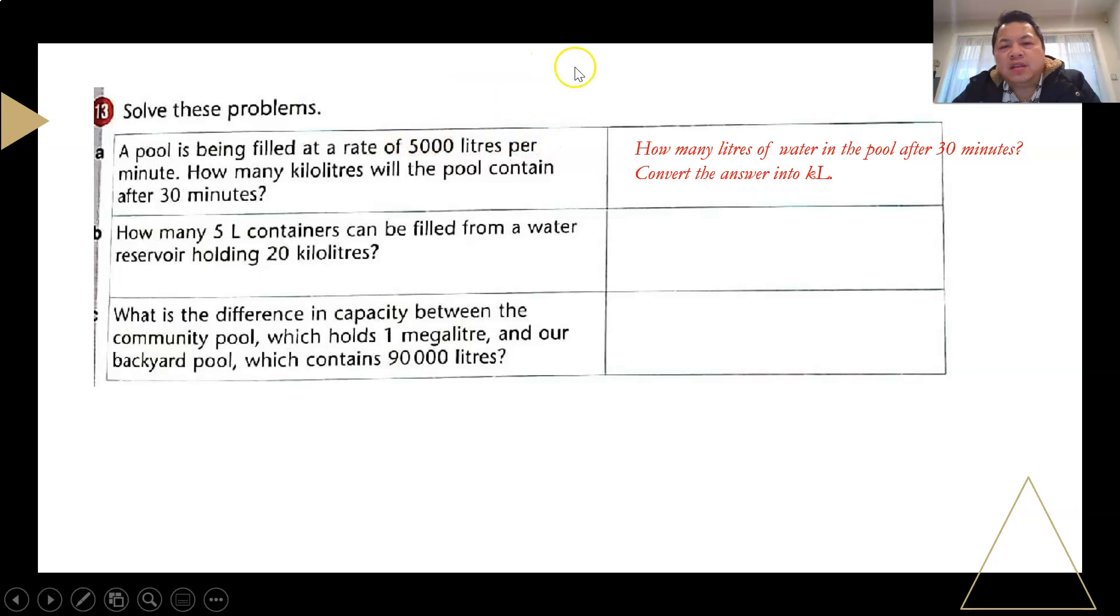Then the answer is in terms of liters, and from there, you need to convert it into kiloliters. That's right, some of you are saying, well, the relationship between liters and kiloliters is 1,000 liters is 1 kiloliter, so that's right, you just need to divide by 1,000 to get your answer in terms of kiloliters.